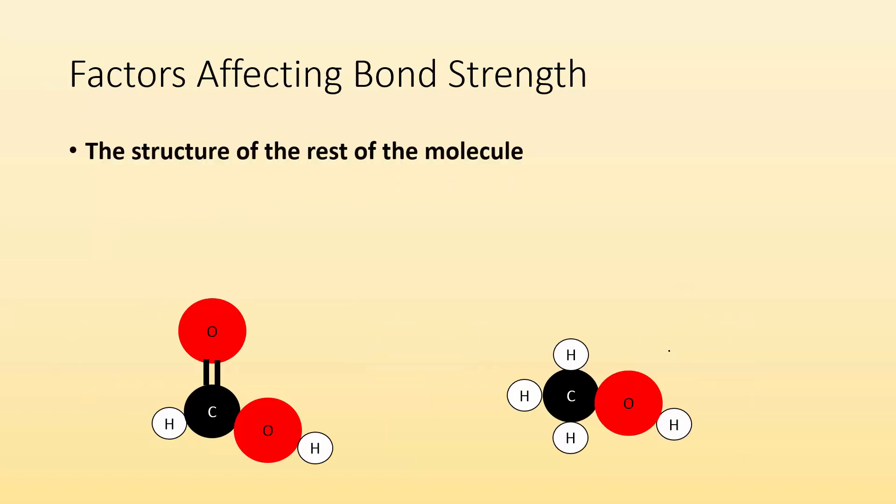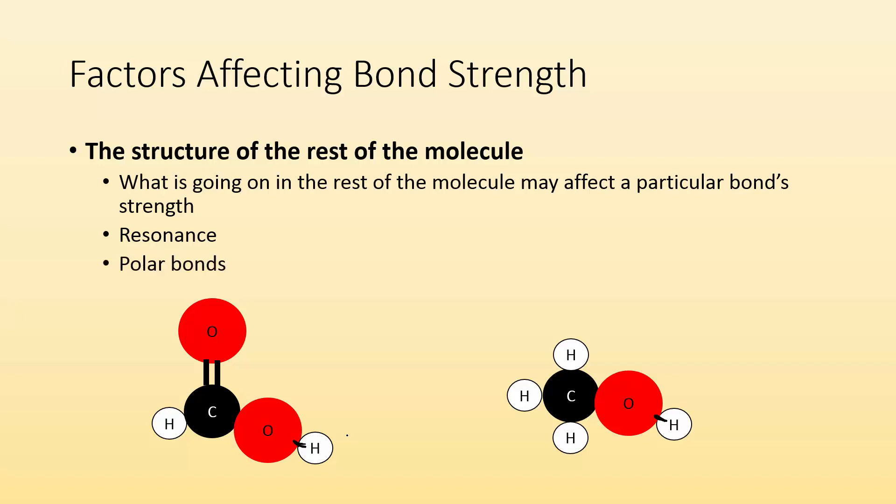Alright, other things. The structure of the rest of the molecule. You may not think about it, but I'm just interested in this hydrogen-oxygen bond maybe. And it should be the same in all molecules. But that's not true. The structure and what's going on in the rest of the molecule may affect the particular bond strength. So if we take a look at instances where resonance occurs, that may affect the bond enthalpy. Or if there's polar bonds somewhere else in the molecule, that may affect the bond enthalpy. So right here in these examples, we have resonance on the example on the left. But we have resonance after the hydrogen is gone. So breaking that bond is a little easier because it's more stabilized than it is in this molecule. Where once we break this bond, there is no resonance. So what's going on in the rest of the molecule does affect the bond enthalpy.